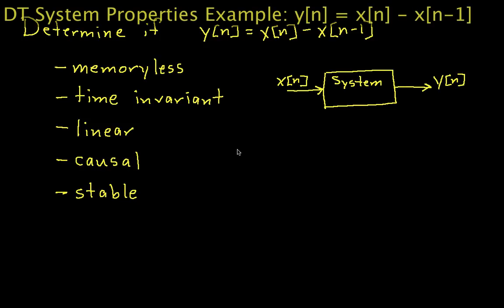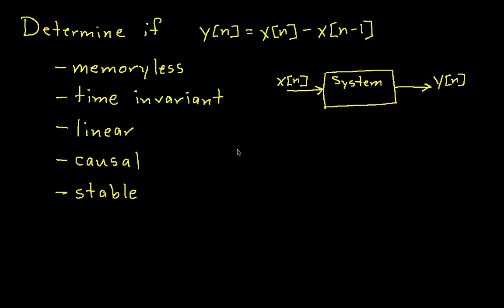We'll look at the system properties for a system where the output is the difference between the current input sample and the previous input sample. Our goal is to determine if this system is memoryless, time-invariant, linear, causal, and stable. This system is an example of the type you see a lot — it's defined by a difference equation where on the right-hand side we have the difference between x at one time and the previous time. You see these sorts of things quite often when dealing with discrete-time systems.